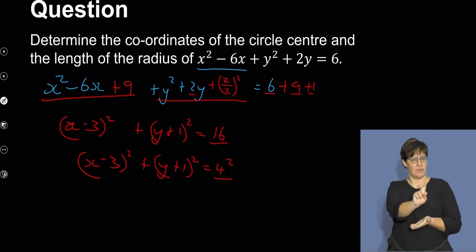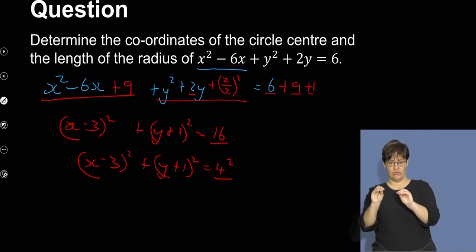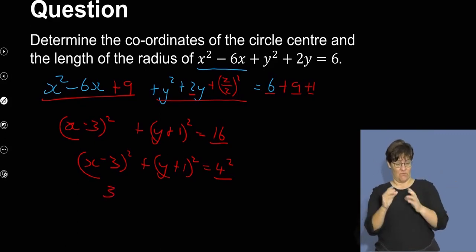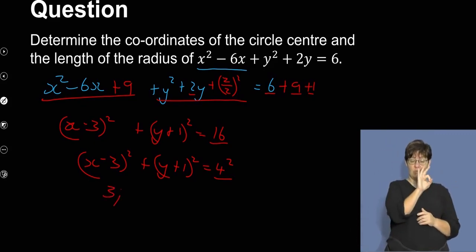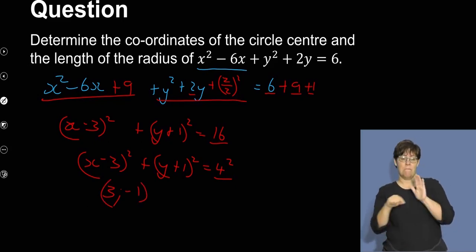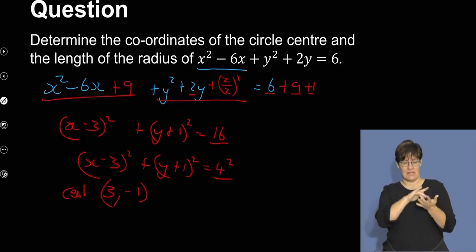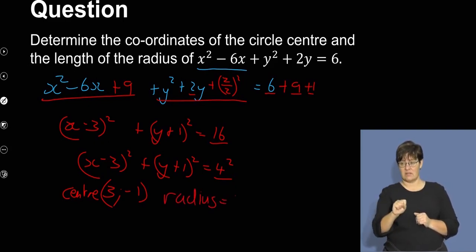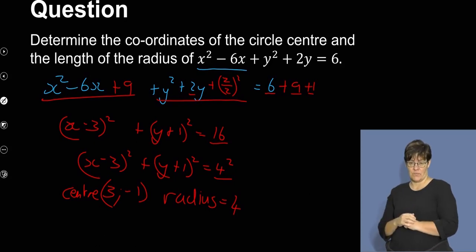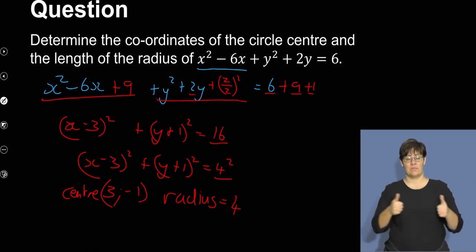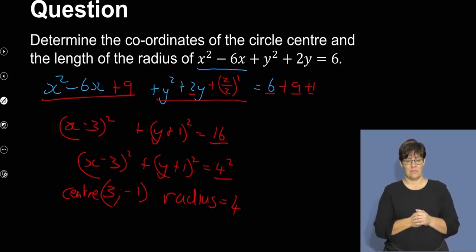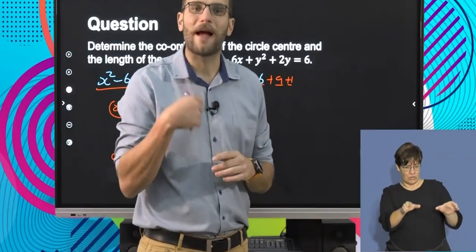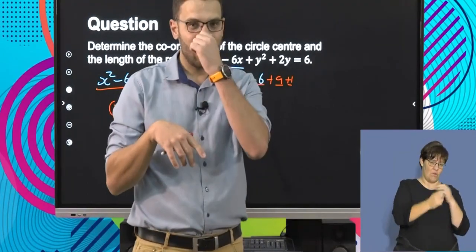Writing one more line: (x minus 3) squared plus (y plus 1) squared equals 4 squared. Now in standard form, I can read the center: x minus 3 shifts it right, so the x-coordinate is 3; y plus 1 shifts it down, so the y-coordinate is minus 1. The center is (3, -1) and the radius equals 4.